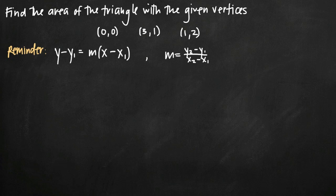Today we're going to be talking about a variation on the area between curves problem, which is how to find the area of a triangle with given vertices. We've been given the vertices (0,0), (3,1), and (1,2), which are the corners of the triangle, and we've been asked to find the area of this triangle.